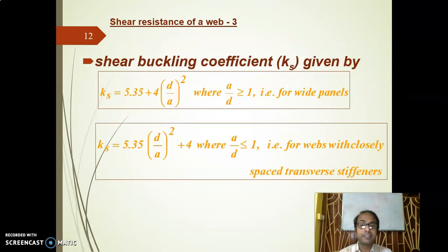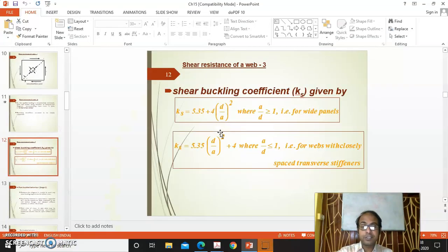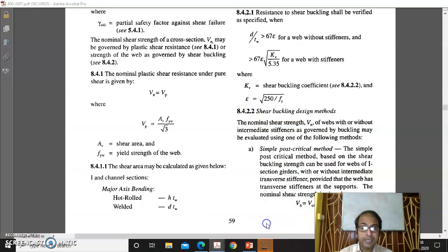Boundary condition is assumed to be simply supported along all the sides of this rectangular plate. These are some shear buckling coefficients and all these things which are mentioned in the code. We may go to IS 800. After checking this d by dw, if it is greater than 67 epsilon, we will decide that buckling will occur.